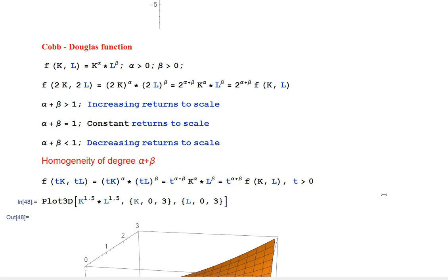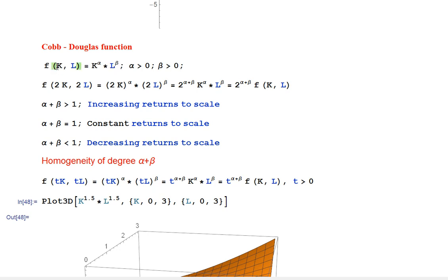Here we discuss the definition of the Cobb-Douglas production function and a couple of its properties. F denotes the production function with two arguments, called inputs in economics: K stands for capital and L stands for labor. The dependence of the output F(K,L) on capital and labor is given by this definition.